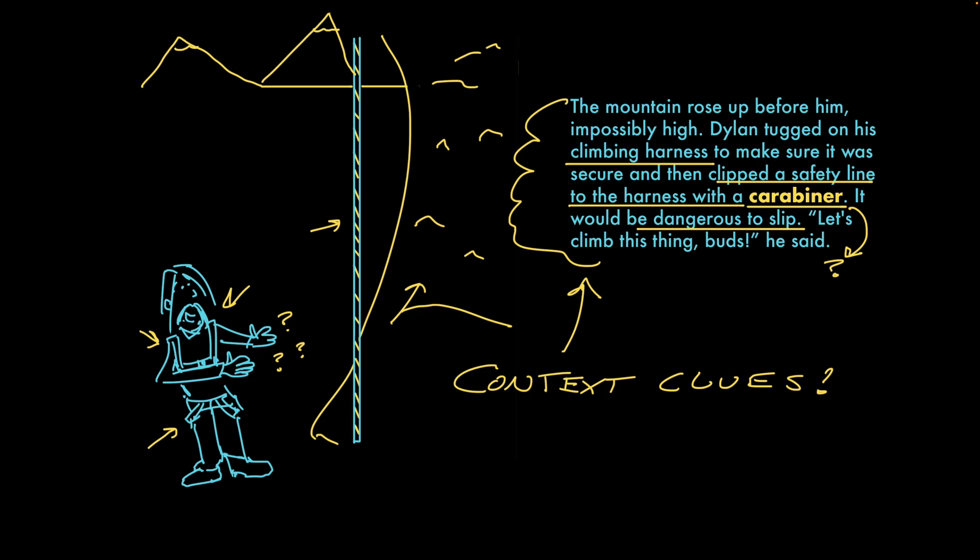So, whatever this thing is, it's probably some piece of gear that you use to clip things together to prevent you from falling when you're climbing something. So, let me try to write out my own best-guess definition. A carabiner is an object that you use to connect a climbing harness to a rope so you don't slip.